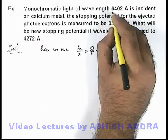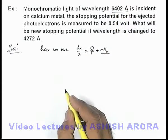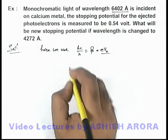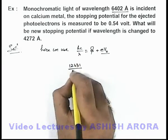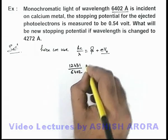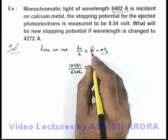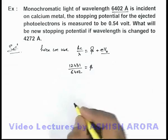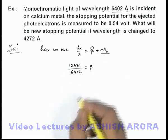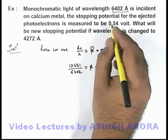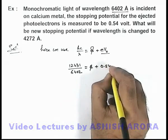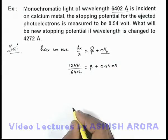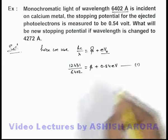So here initial wavelength we are given as 6402 angstrom. So here in electron volt we can directly use it 12431 by 6402, which is equal to the work function. We are not given here so we can write it φ plus the stopping potential is 0.54 volt so it'll be 0.54 electron volt. So this is our equation 1.